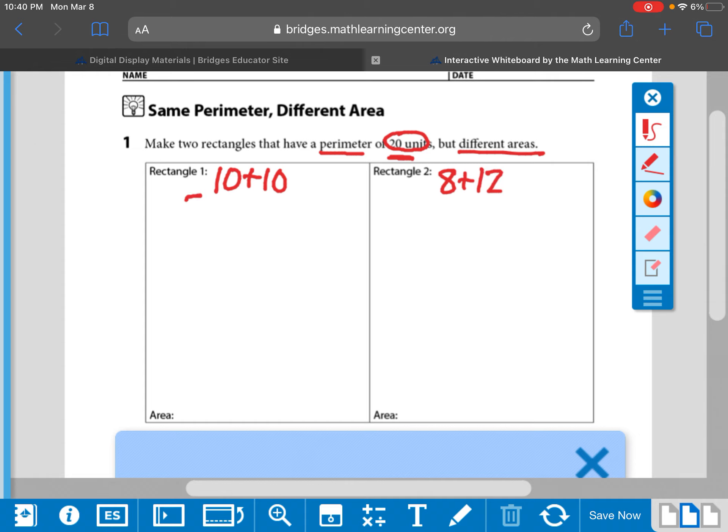For 10 plus 10, we're going to end up with a 5 plus 5 and a 5 plus 5. So this is going to be a square, which is still a rectangle, and it's a 5 by 5.